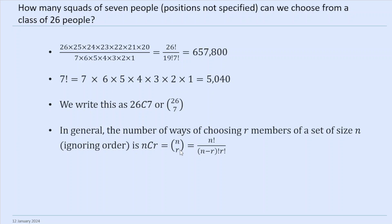Should we do that in our heads? Come on, it's not hard! 1 times 2 is 2, times 3 is 6, times 4 is 24, times 5 is 120, times 6 is 720 — I haven't prepared this — and 720 times 7: 700 times 7 is 4,900, and 7 times 20 is 140, so it's obviously 5,040. Yay!